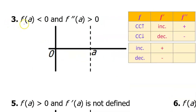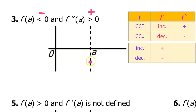For problem number three, we are told that f at a is less than zero — the value of the function at a is negative, so I'm going to put a dot below the x-axis. But we're also told that f double prime at a is greater than zero. Remember the chart: if the second derivative is positive, that means the function is concave up. So we need to draw a function through here that is concave up.